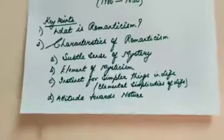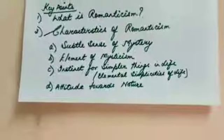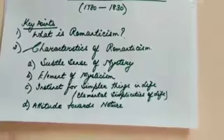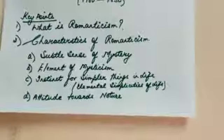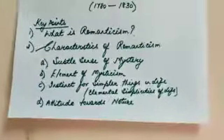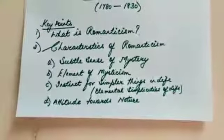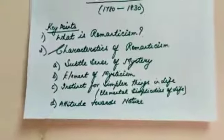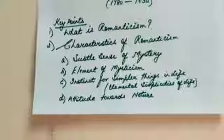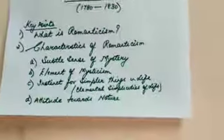So these are a few characteristics of the Romantic age — the Romantic Revival, which is characterized from 1780 to 1830. Tomorrow we are going to take up the first poem prescribed in the syllabus by James Thompson, who happens to be a pre-Romantic poet. The poems prescribed in the syllabus will be dealt with in detail and critical appreciation will be given in each and every class. Thank you.